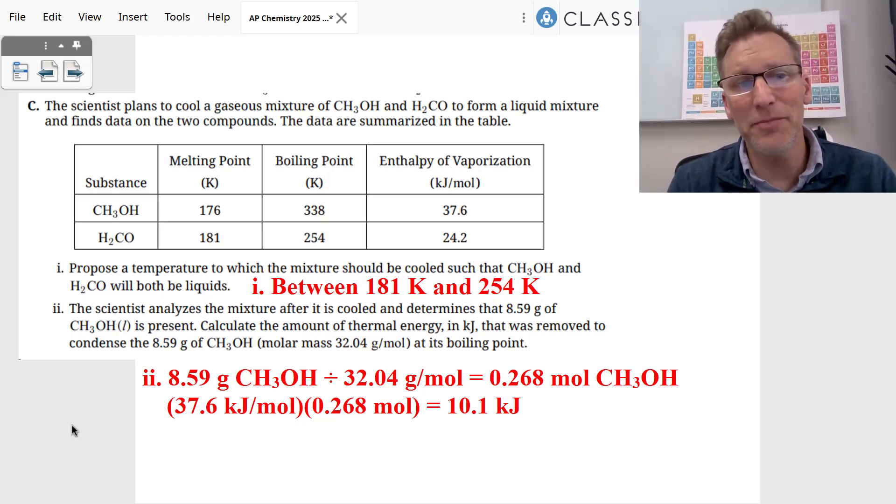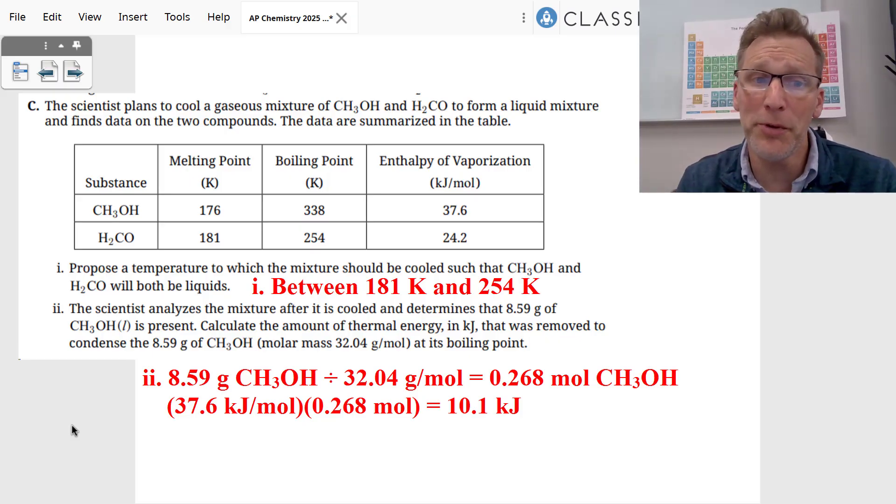And then it gives us some data for both molecules, and they wanted the student to propose a temperature at which the mixture could be cooled such that both of them will be liquids, which means they both have to be melted but not boiled yet. So the student had to put something between 181 Kelvin and 254 Kelvin. A safe number is 200 Kelvin.